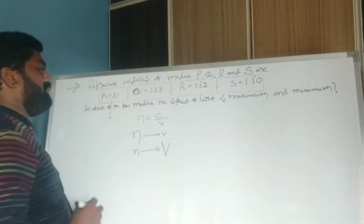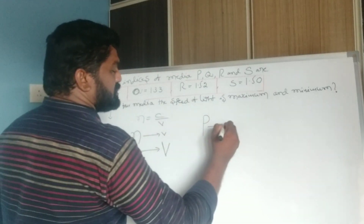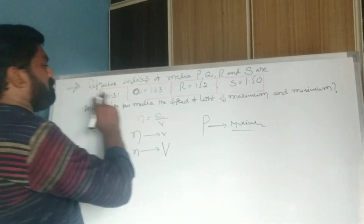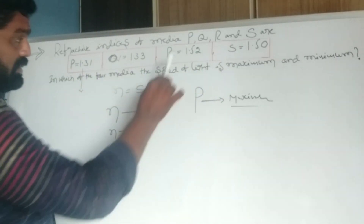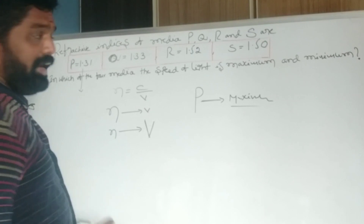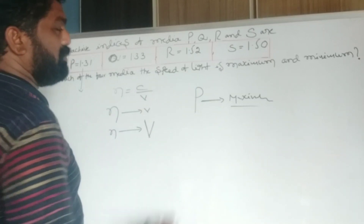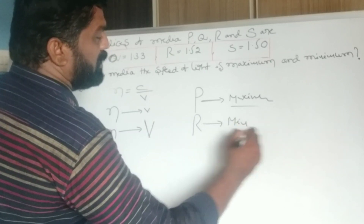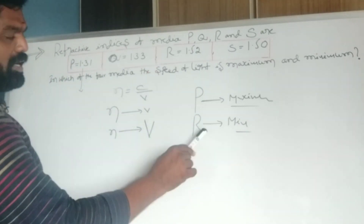Because P has the least refractive index, the velocity of light is maximum in P. Medium R has the highest refractive index of 1.52, so the speed of light is minimum in R. Therefore, speed of light is maximum in P and minimum in R.